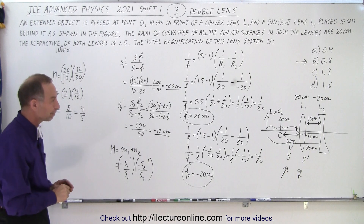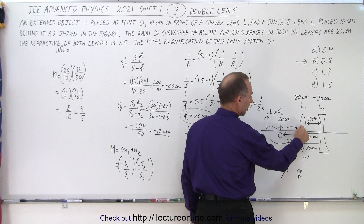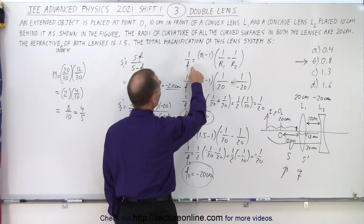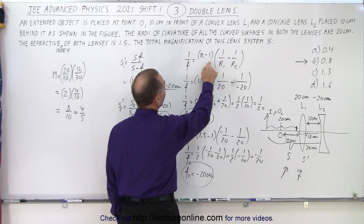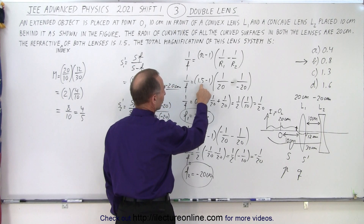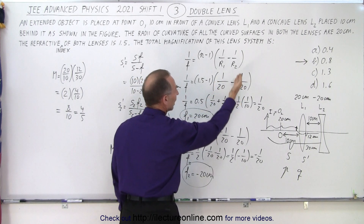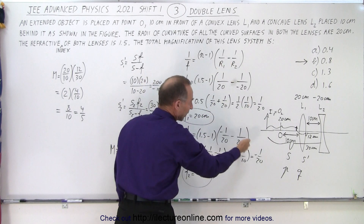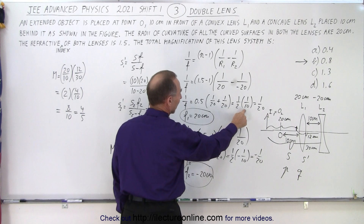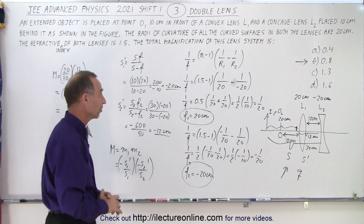Quick recap: they gave us a double-lens system with an object 10 centimeters in front of the first lens. Since the focal lengths weren't given, we used the lens maker's equation: 1 over F equals N minus 1, times 1 over R1 minus 1 over R2. The refractive index was 1.5, so 1.5 minus 1 is 0.5. We have 1 over 20 minus 1 over negative 20 — when it bulges left it's positive, when right it's negative. Subtracting the negative gives a positive, yielding 1/2 times 1/10 equals 1/20, so the focal length of the first lens is positive 20 centimeters.